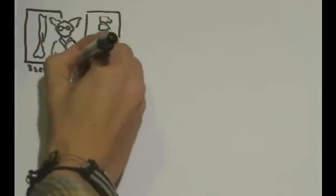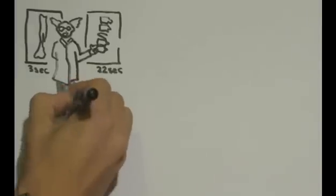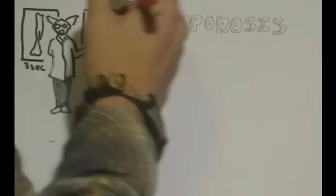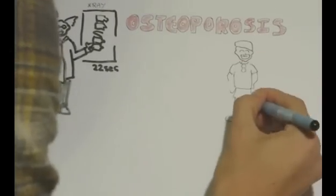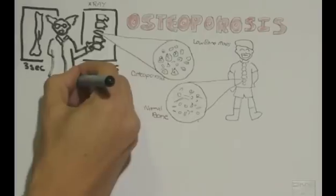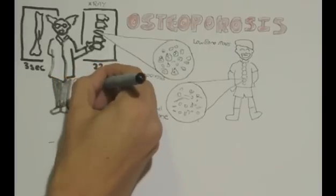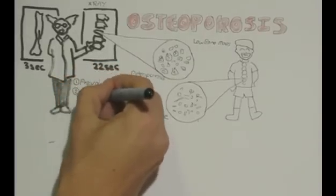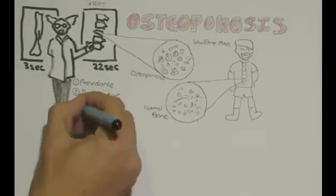It is estimated that an osteoporotic fracture occurs globally every 3 seconds and a vertebral fracture every 22 seconds. These are a direct result of osteoporosis, a skeletal disease characterized by low bone mass and microarchitectural deterioration of bone tissue. This disease affects more than 200 million people worldwide. The objective of this presentation is to explain the pathophysiology and various problems associated with osteoporosis.